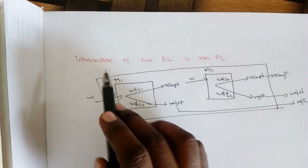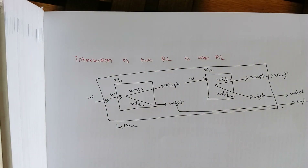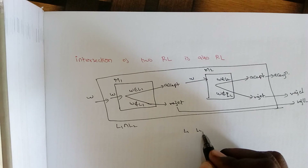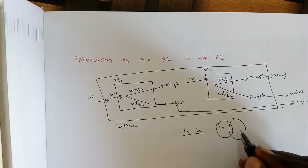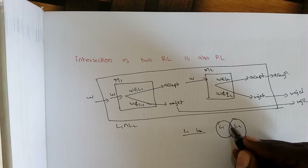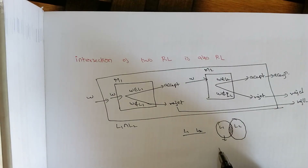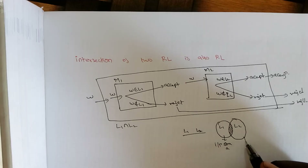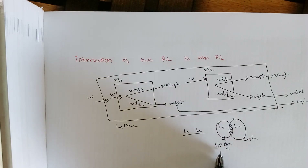The next property is that the intersection of two recursive languages is also recursive. Intersection means: when you consider languages L1 and L2, if the input is in both L1 and L2, that set alone is accepted. Like the Venn diagram — whichever is common to L1 and L2 is L1 intersection L2. For example, L1 intersection L2 is all palindrome strings that start with A.